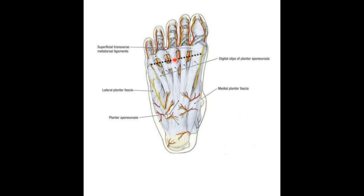The plantar fascia is not the first layer of muscle — it is the first layer on the plantar surface of the foot. It's a protective layer. When we transect and reflect the plantar fascia away, we get into the four intrinsic layers of the plantar surface of the foot, which we'll talk about next.